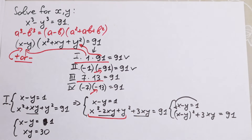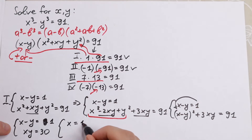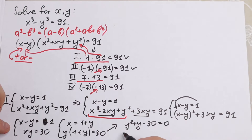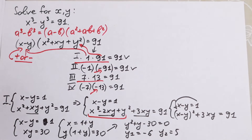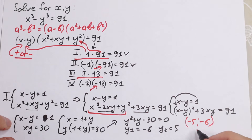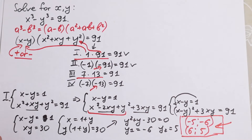To solve this system, we substitute x equals 1 plus y into the second equation: y(1 plus y) equals 30, giving y squared plus y minus 30 equals 0. This quadratic gives y equals minus 6 and y equals 5, leading to two solution pairs: (minus 5, minus 6) and (6, 5).